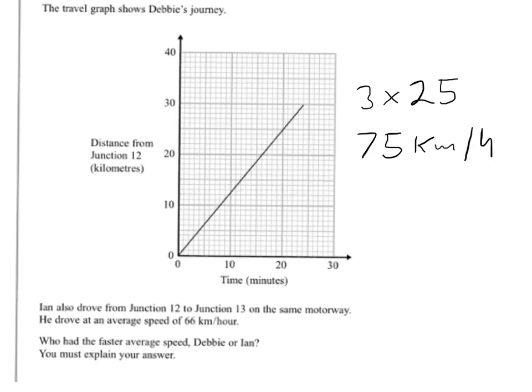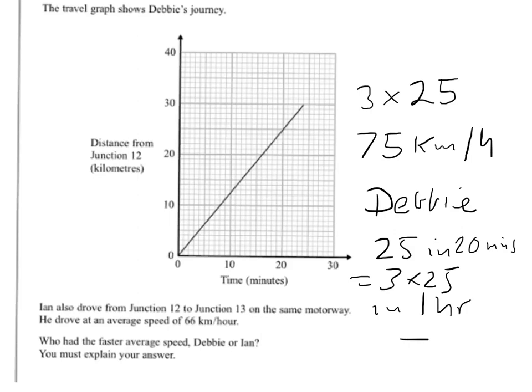So Debbie's speed is faster. The answer is Debbie. Now you might just want to say that 25 in 20 minutes equals three times 25 in one hour. Just write that down. It shows a bit more working. It's quite clear how you got the 75 and why you multiplied it by three.